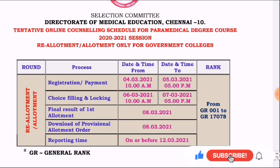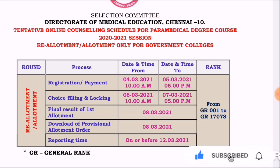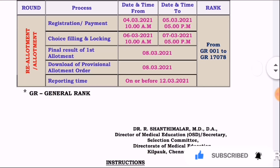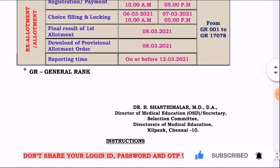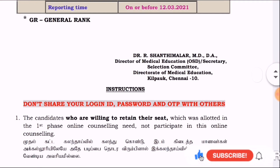If you have a customer, you will need to open your login ID and password. If you have a student that has to be open, then you will need to change the option. If you have a registration process, you will need to select the second option. If you have a reallotment, you will need to change the choice. If you have any option, you can follow the personal details.